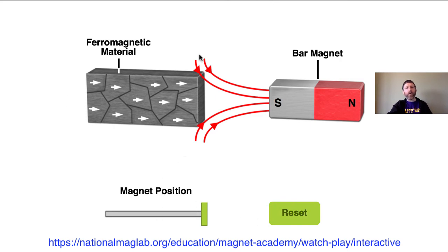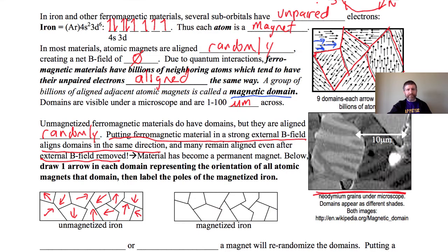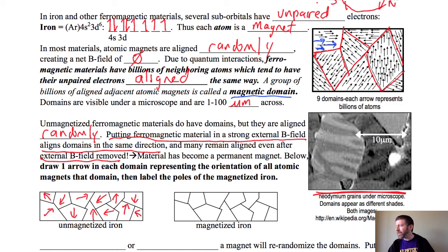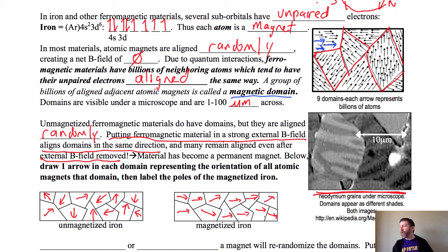Now if I shake or heat this ferromagnetic material, or slam it on the ground, or heat it to what is called the Curie temperature, those domains get re-randomized and it goes back to random alignment. That is how you make and then break a permanent magnet. Here's magnetized iron: the domains all tend to line up in the same direction — that is a magnetized piece of iron.